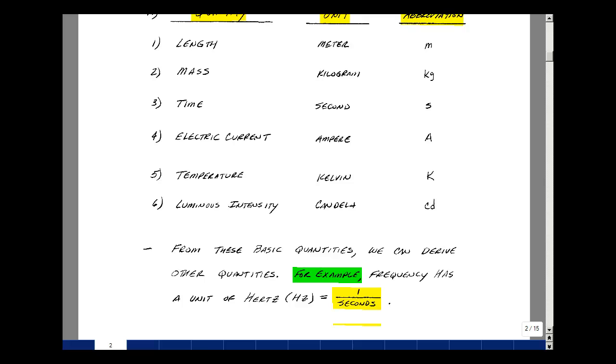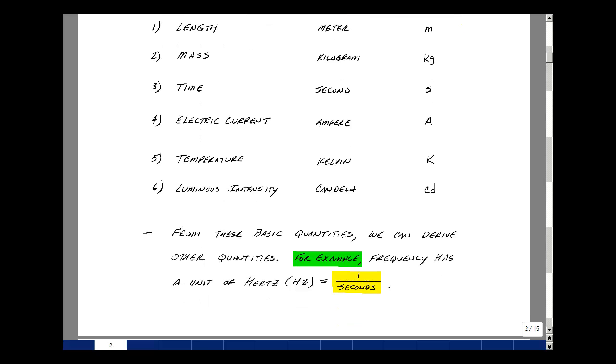Now, from these basic quantities, we can define other quantities. An example would be the frequency in hertz. The formula for that is one over seconds.